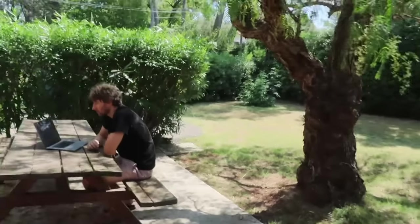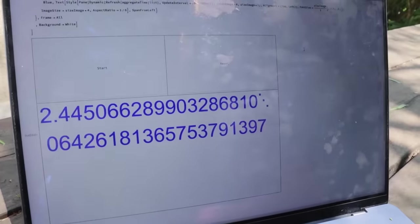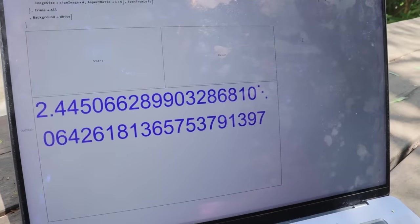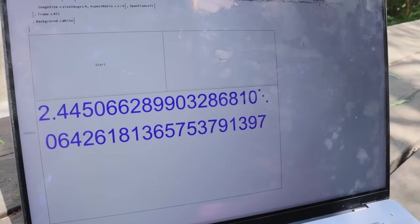All right, let's see what we got. 2.4450662899032 etc etc seconds. But is that the exact time? Of course there's a human reaction time we need to take into account. Just like with any measurement, there's also the processing speed of the computer. In reality, it's only accurate up to about three decimal places.